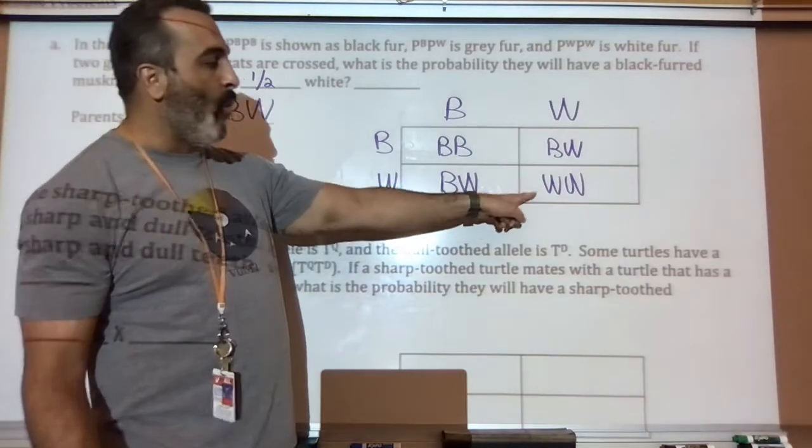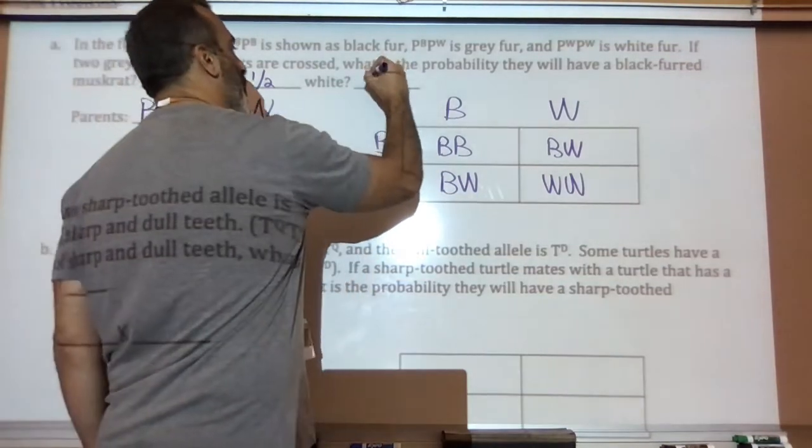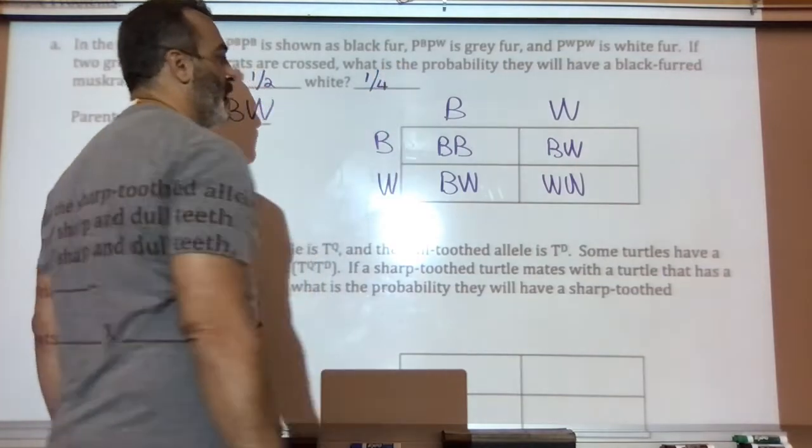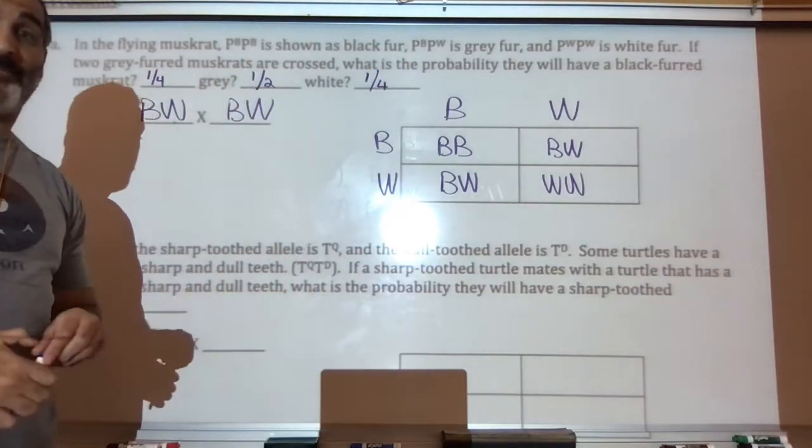And white. How many of them are white? One of them is white. That is one out of four. That is the first type of problem.